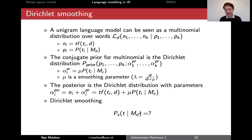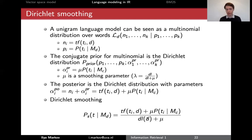The new parameters of the posterior distribution in terms of term frequencies and collection frequencies give us the Dirichlet smoothing formula. The prior probability of a term was tf divided by document length; the posterior probability after computing the posterior parameters gives us this new formula — this is called Dirichlet smoothing.